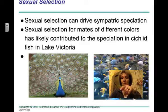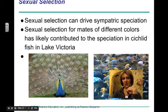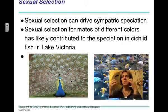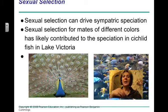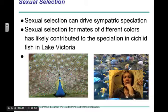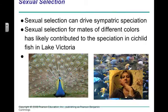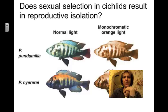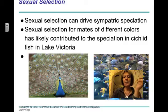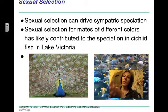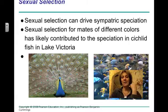Sexual selection can also drive sympatric speciation. We know from the video we watched that sexual selection, mate selection, and mate choice can also drive evolution. We see this with peacocks, but we also see it in a type of fish called cichlid fish in Lake Victoria. This was a very interesting experiment — you can see all the different variations of these cichlid fish, which are very popular aquarium fish.